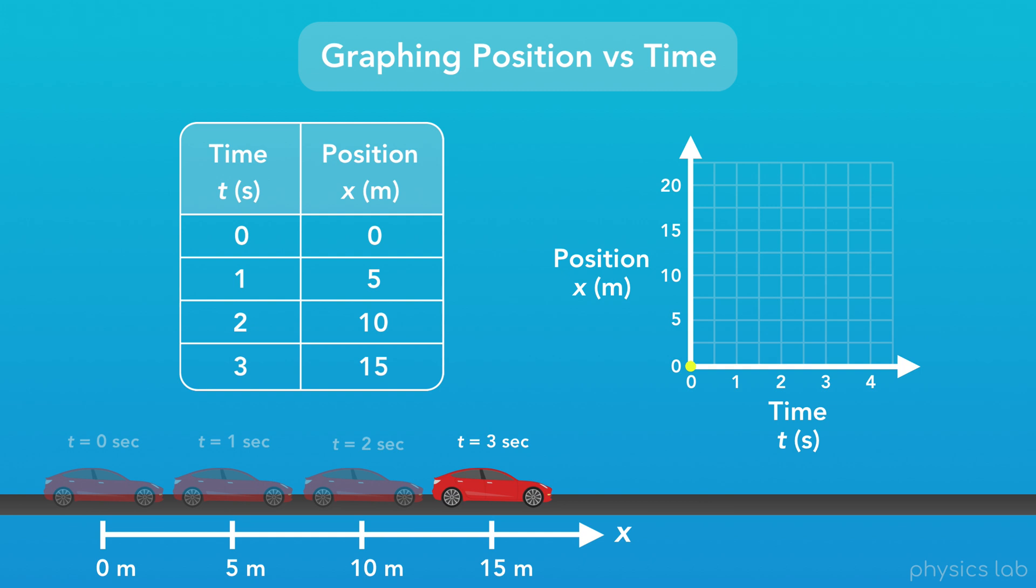Next, when time equals 1 second, the position of the car is 5 meters, so we'll plot the point where time equals 1 and position equals 5. We also have points for when time equals 2 seconds, and the position is 10 meters, and when time equals 3 seconds, and the position is 15 meters.